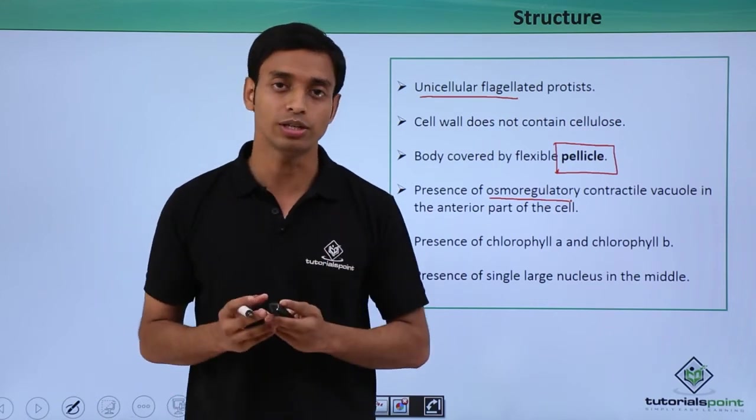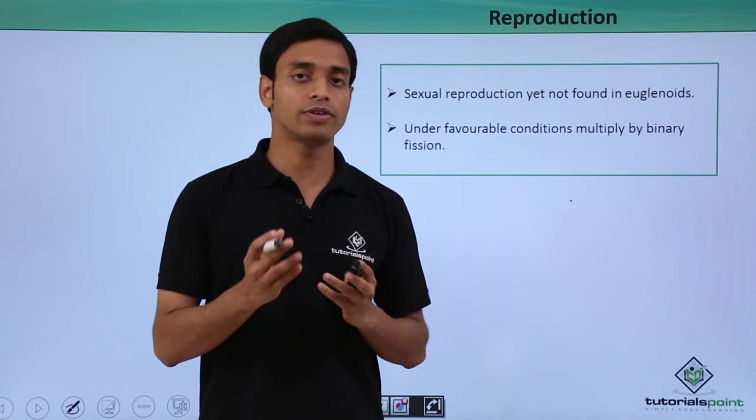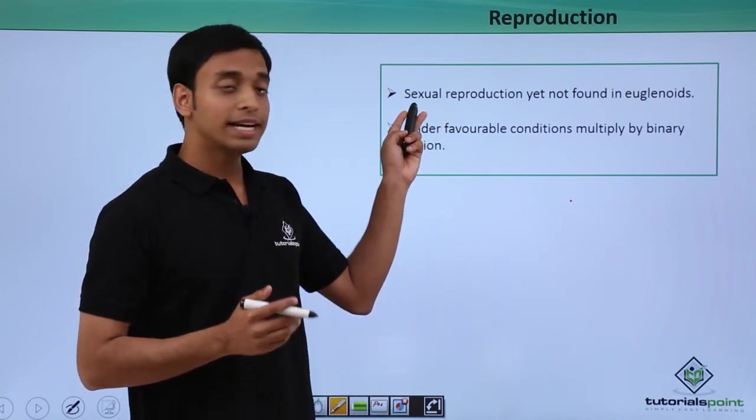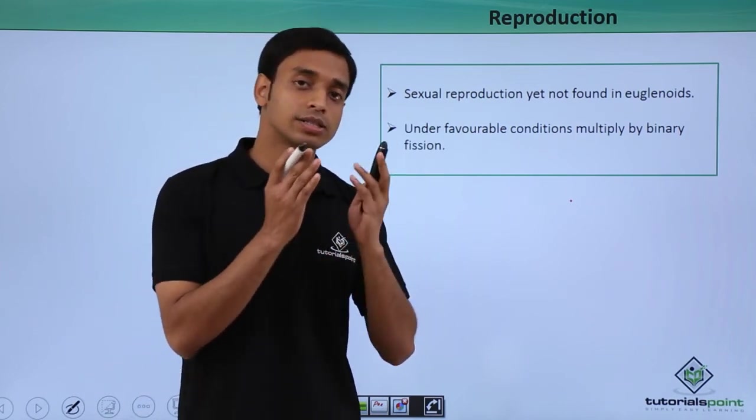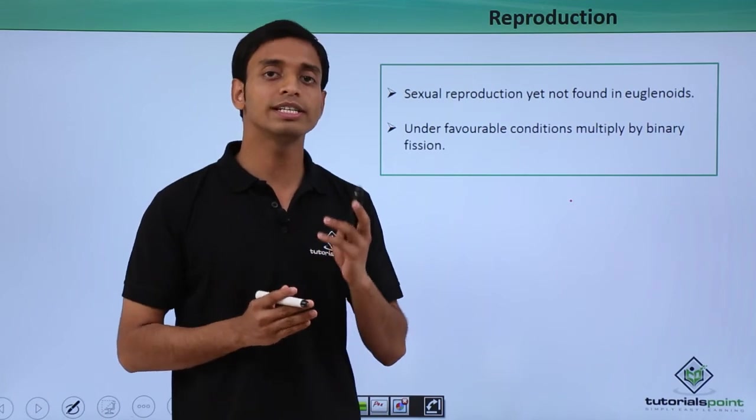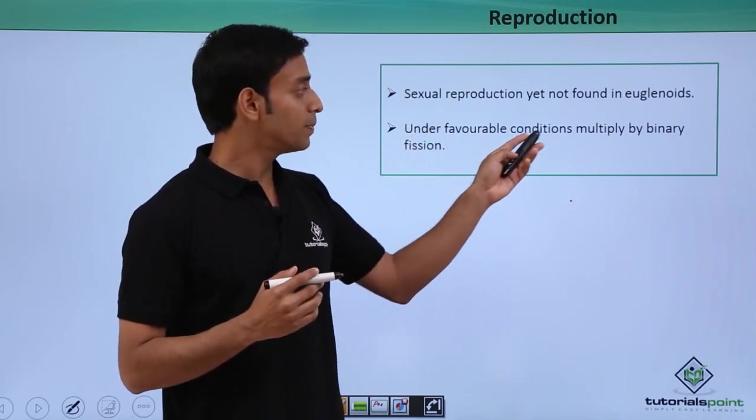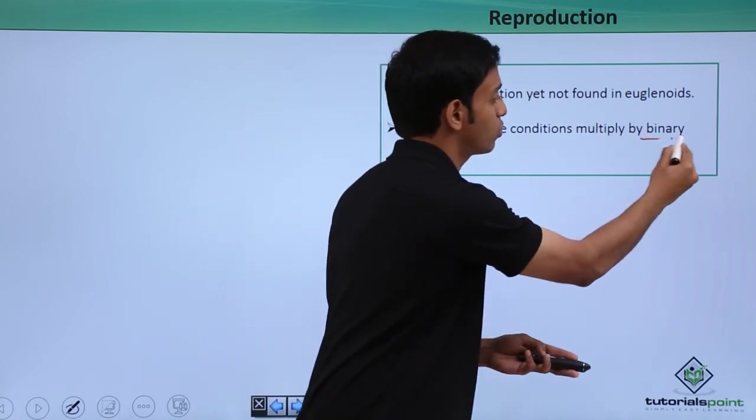Now let us take a look at the type or mode of reproduction in case of euglenoids. In euglenoids, we haven't yet discovered sexual mode of reproduction, so it is yet to be discovered. But under favorable conditions they multiply mostly by binary fission, which is an asexual mode of reproduction.